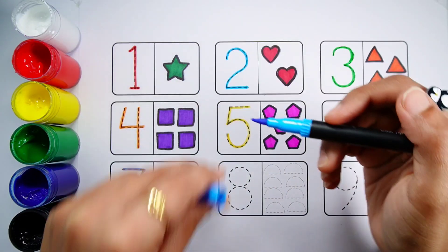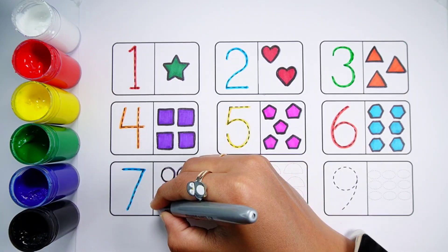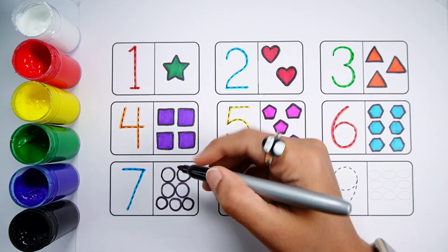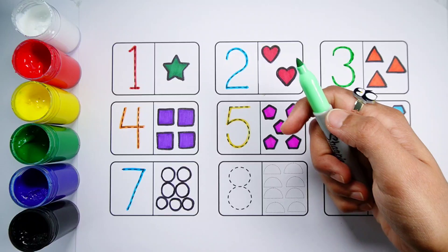Number 7. One Two Three Four Five Six Seven, Seven Circles. Pale Green Color.